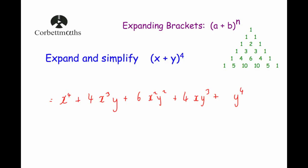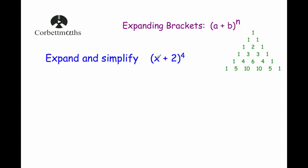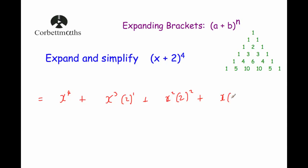Our next question is to expand and simplify x plus 2 to the power of 4. We write out our terms: x to the power of 4, then x cubed times 2 to the power of 1, then x squared times 2 squared, then x times 2 cubed, and finally 2 to the power of 4 — leaving gaps for coefficients and decreasing powers of x while increasing powers of 2.